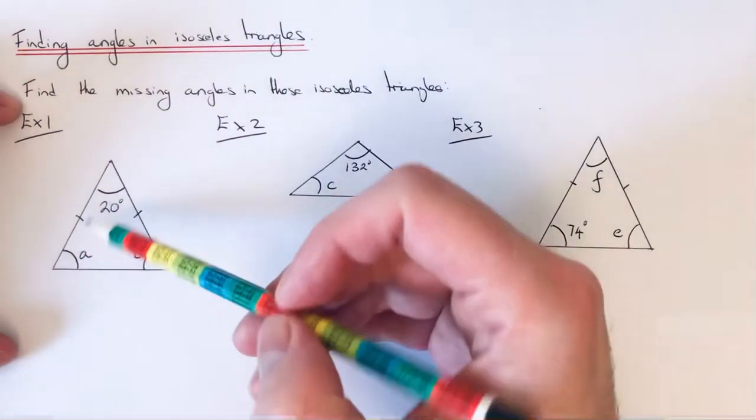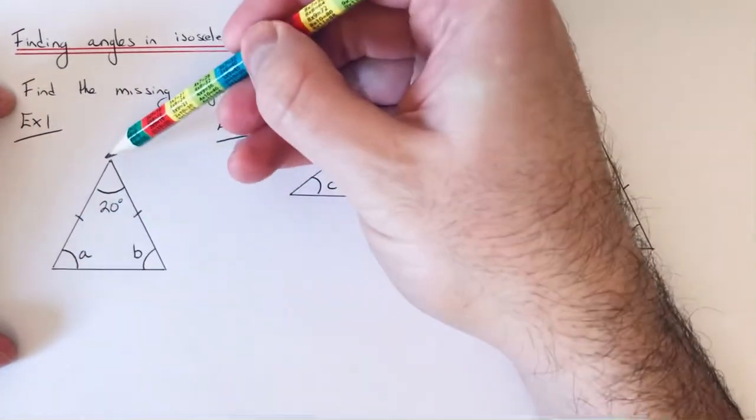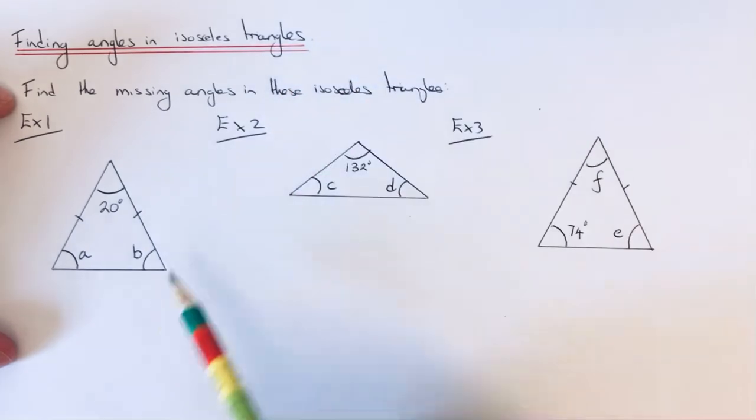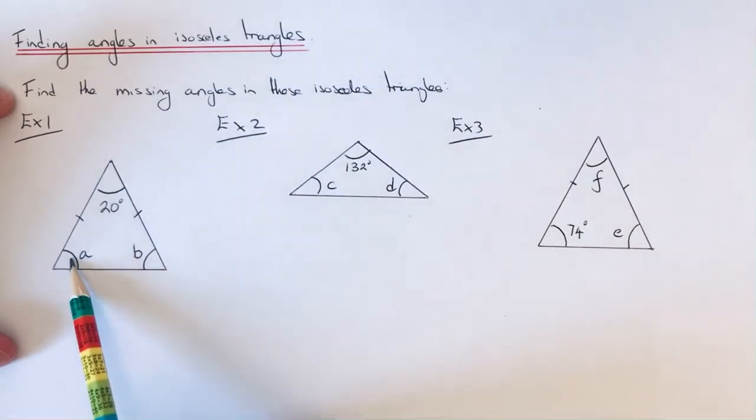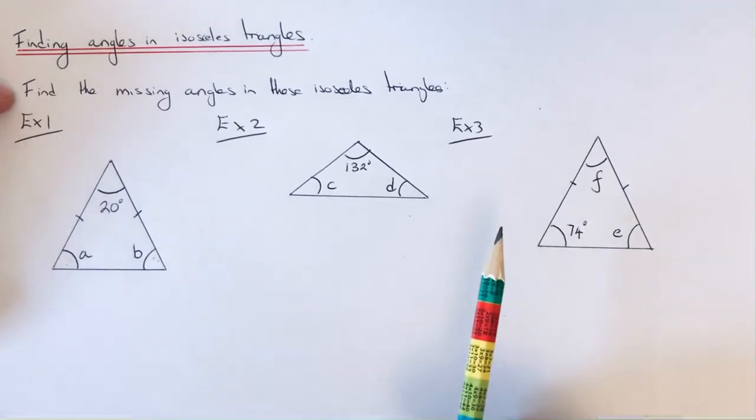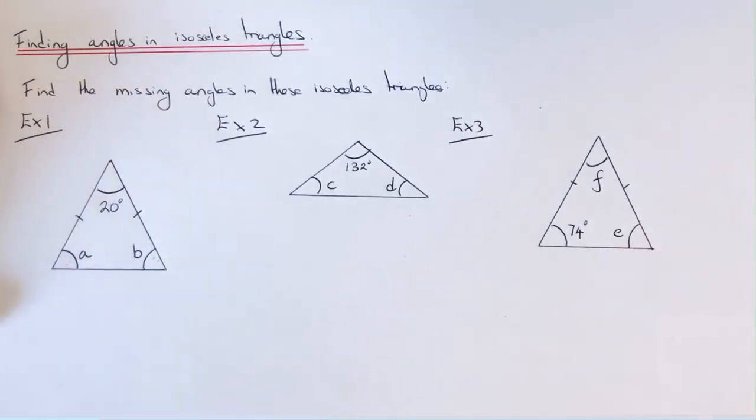An isosceles triangle is a triangle with two equal side lengths and it also has two angles which are the same. So let's have a look at the three examples that we have here. We're going to find the missing angles in these isosceles triangles.